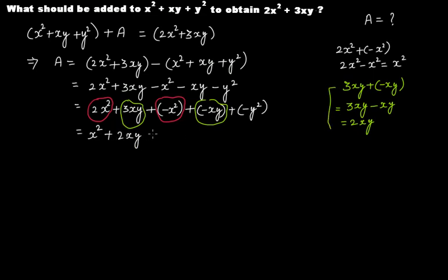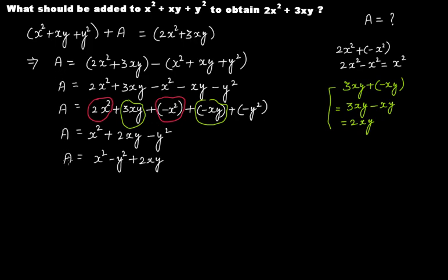So we get 2xy. What remains is plus minus y squared, that is minus y squared. Rearranging: x squared minus y squared plus 2xy. So A equals x squared minus y squared plus 2xy. This is the algebraic expression which when added to x squared plus xy plus y squared gives 2x squared plus 3xy.